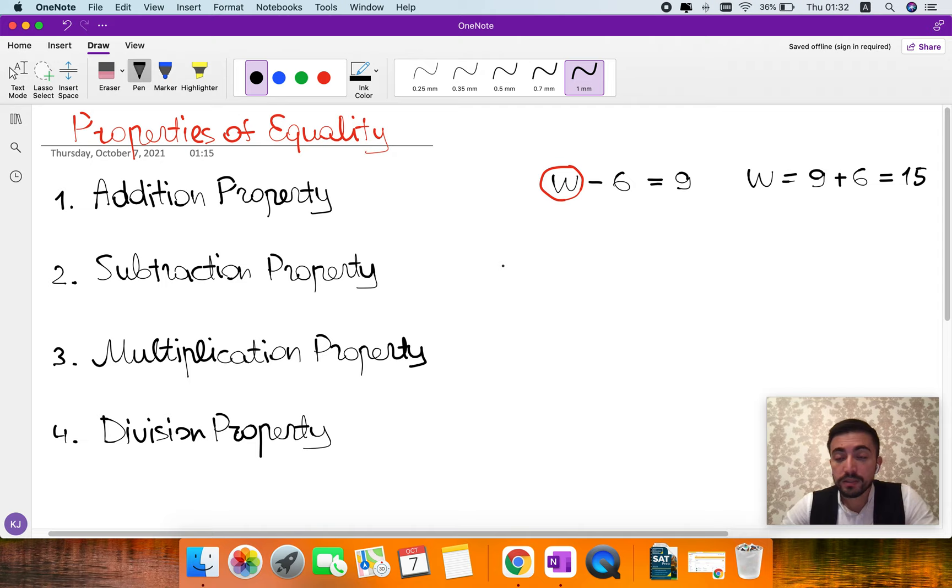So W equals 9 plus 6, which equals 15. The second one is subtraction property.